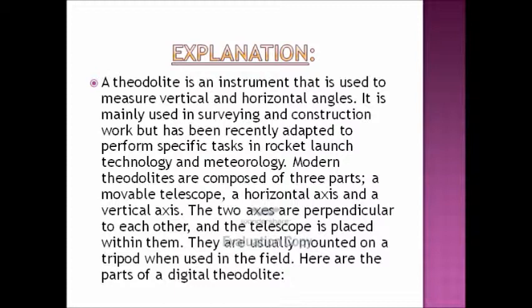Modern theodolites are composed of three parts: a movable telescope, a horizontal axis, and a vertical axis. The two axes are perpendicular to each other and the telescope is placed within them. They are usually mounted on a tripod when used in the field. Here are the parts of a digital theodolite.